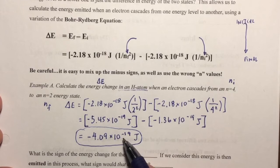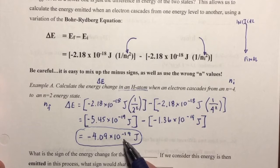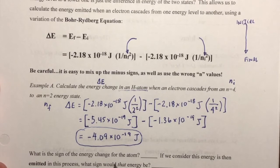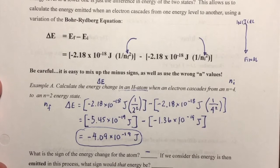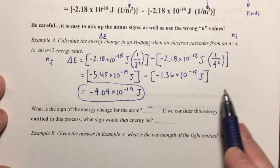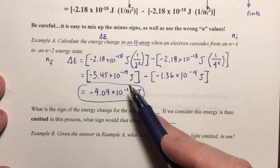Does it make sense that it is a very small number, as shown by the 10 to the negative 19 exponent? Yes, because it's the change in a single atom when a single electron relaxes from n equals 4 to n equals 2. The units of joules make sense because this is a change in energy. Now, if that energy lost from the atom is emitted out into the universe, what would be the sign of the energy emitted? It should be the opposite sign — a positive value.